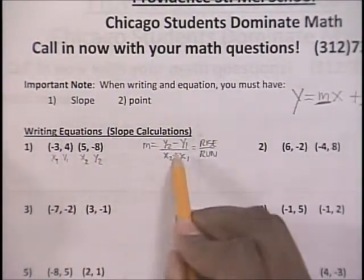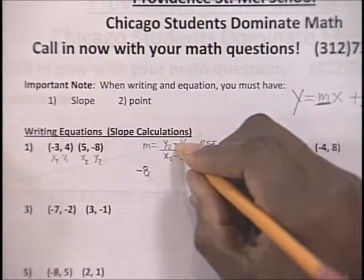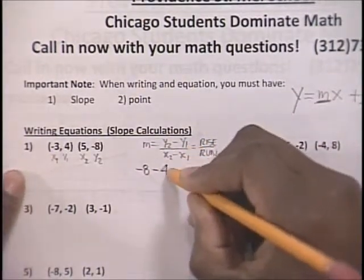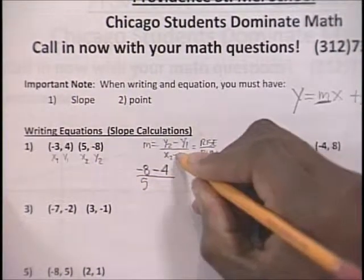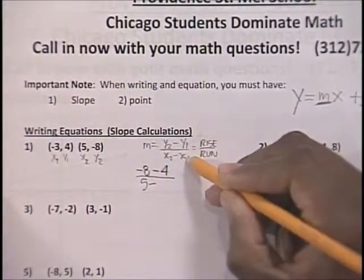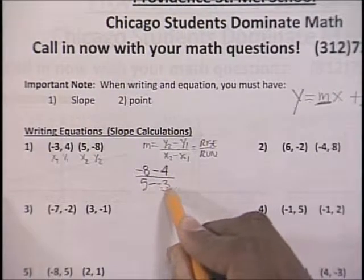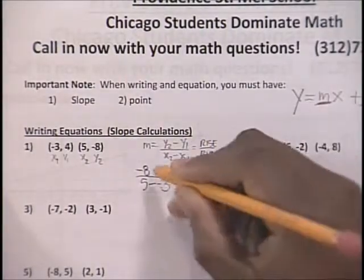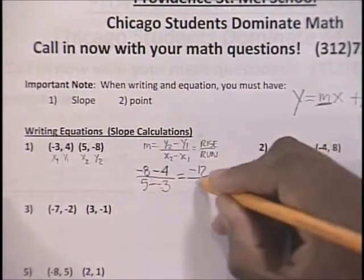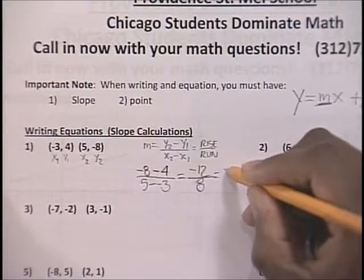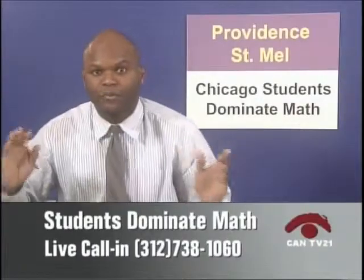All you're doing is substituting each value into the slope equation. So we have y2, which is negative 8, minus y1, which is 4, over x2, which is 5, minus x1, which is negative 3. This minus came from the formula and this negative came from the number negative 3. You end up with negative 8 minus 4, which is negative 12, over 5 minus negative 3, which is 8. Simplify by dividing each by 4 — you get negative 3 halves. You found the slope.